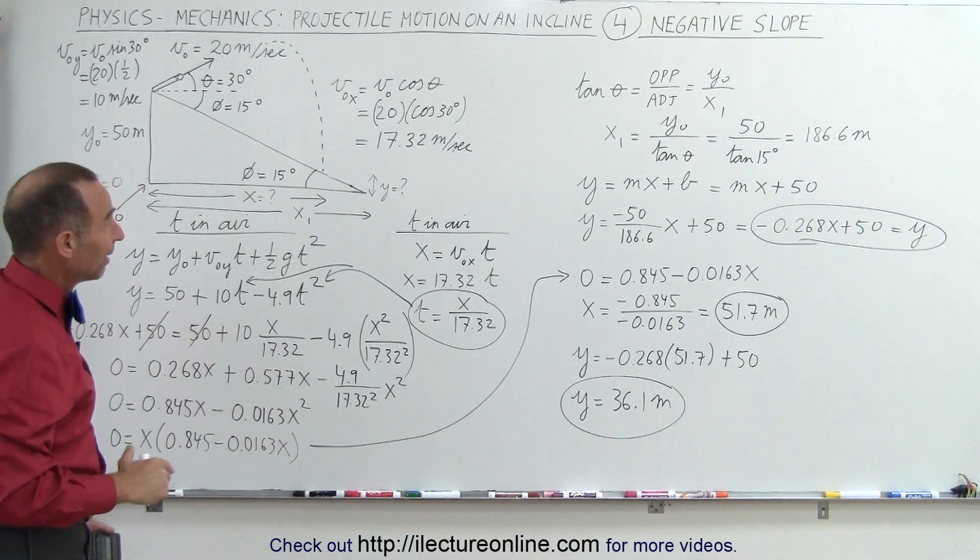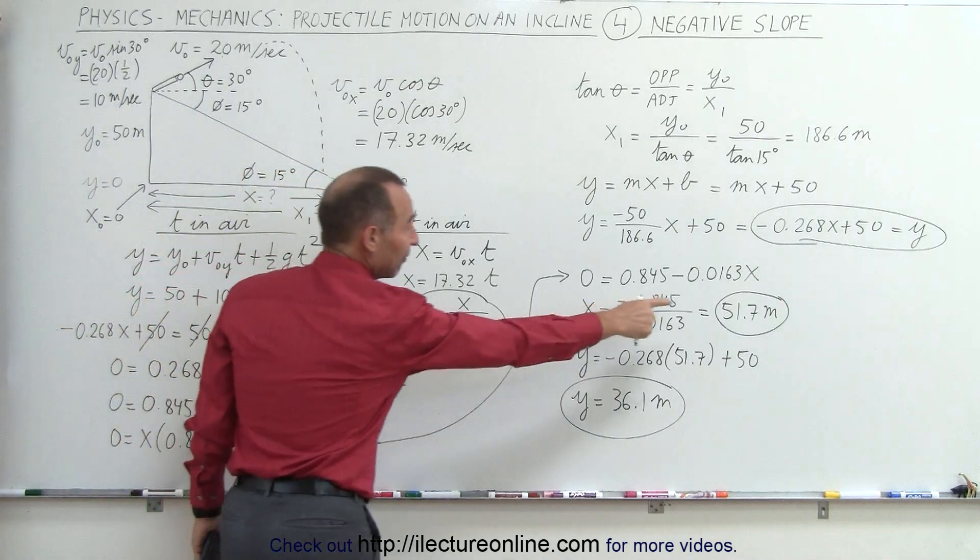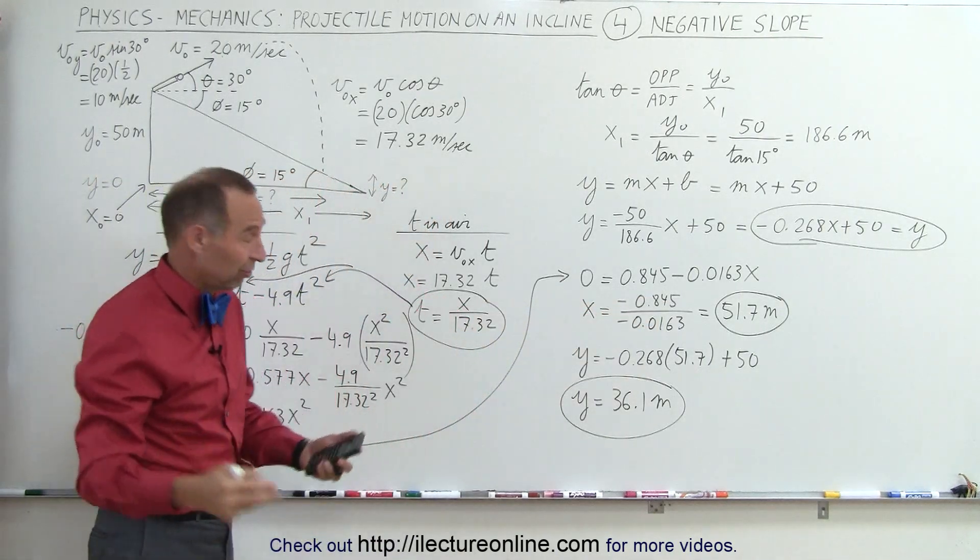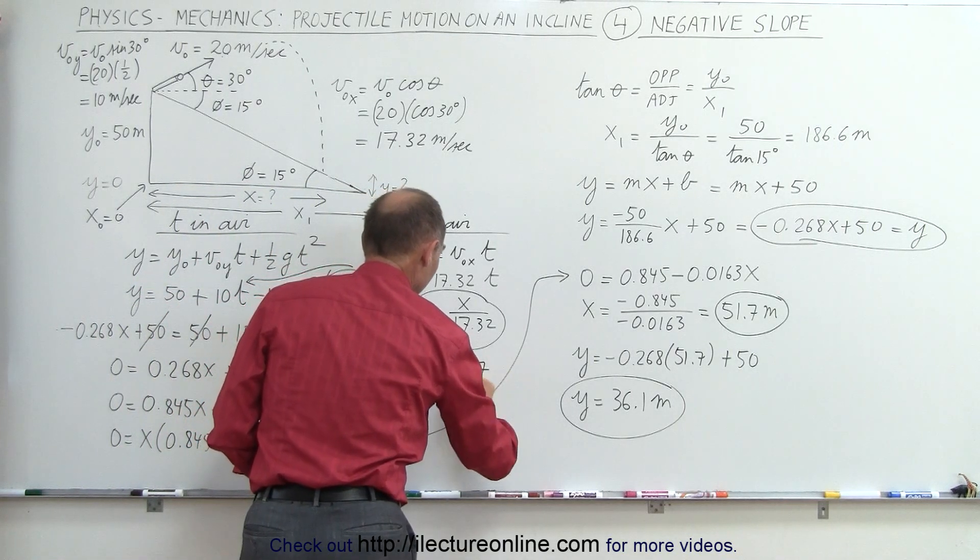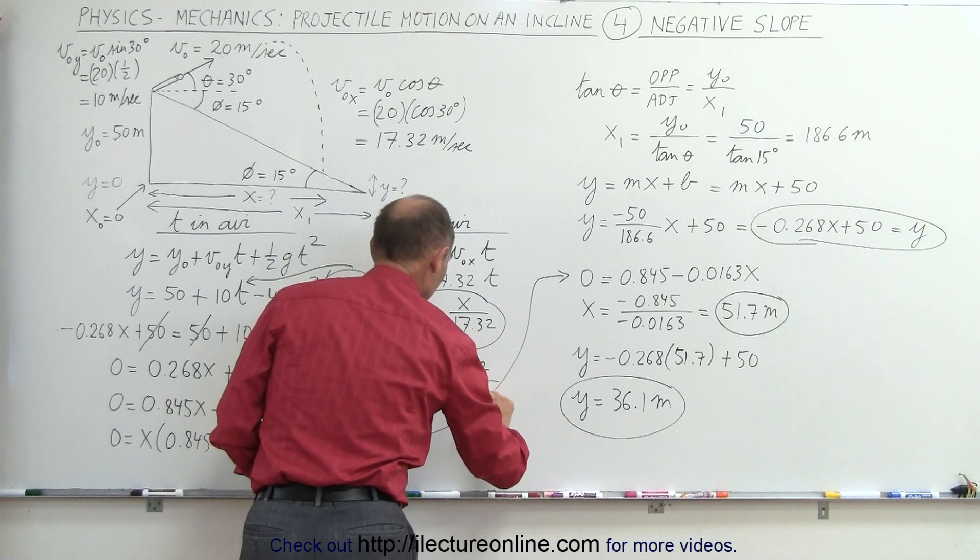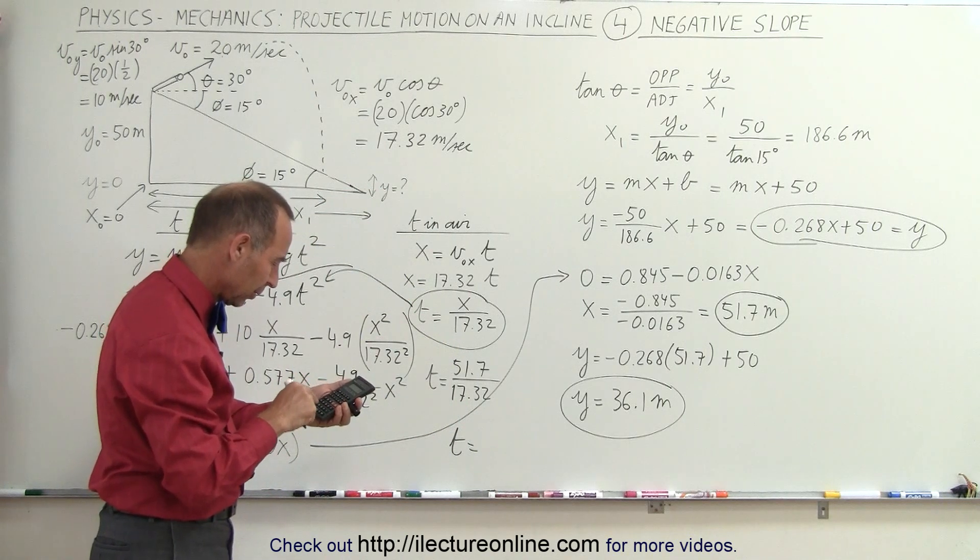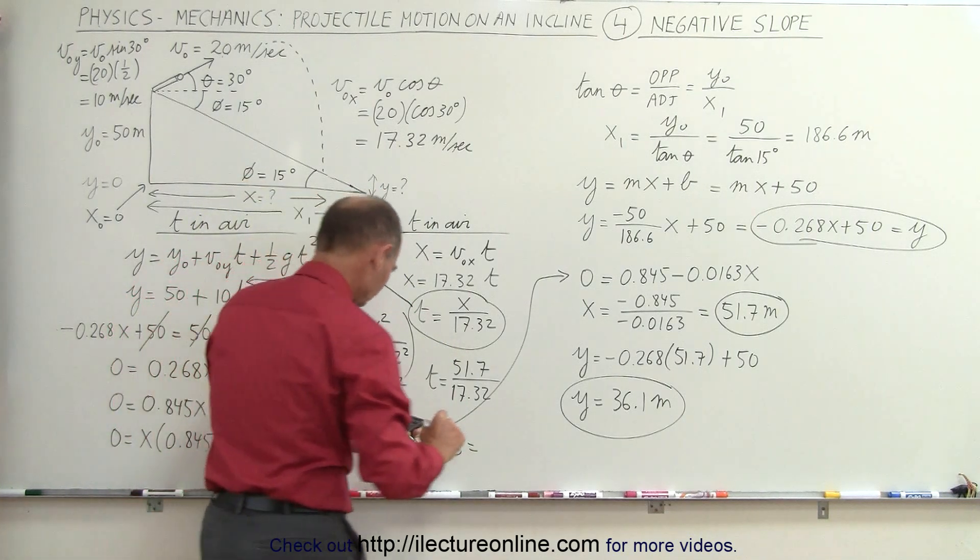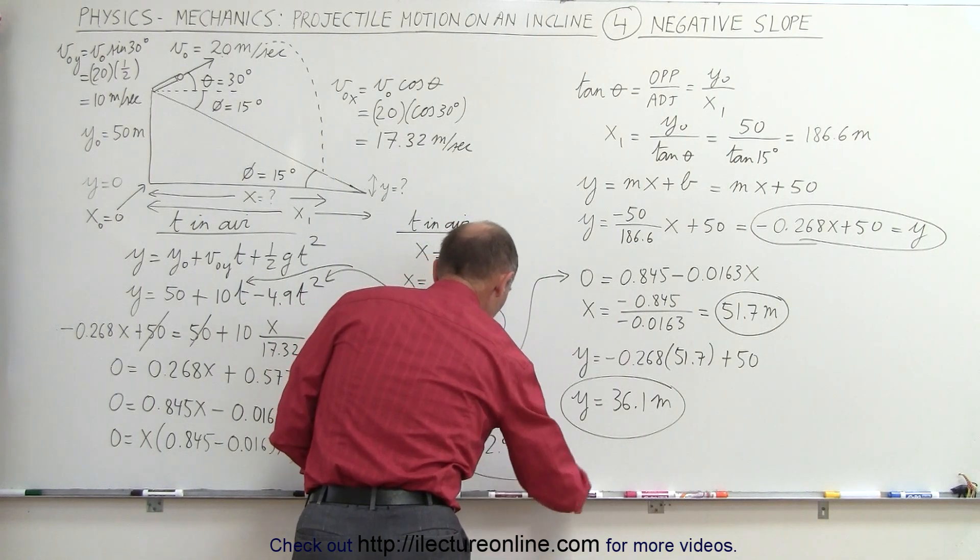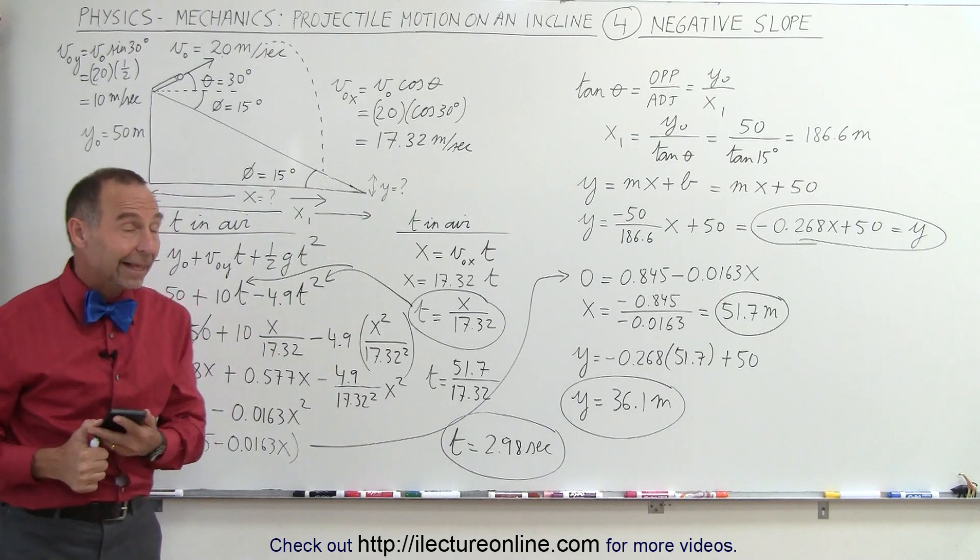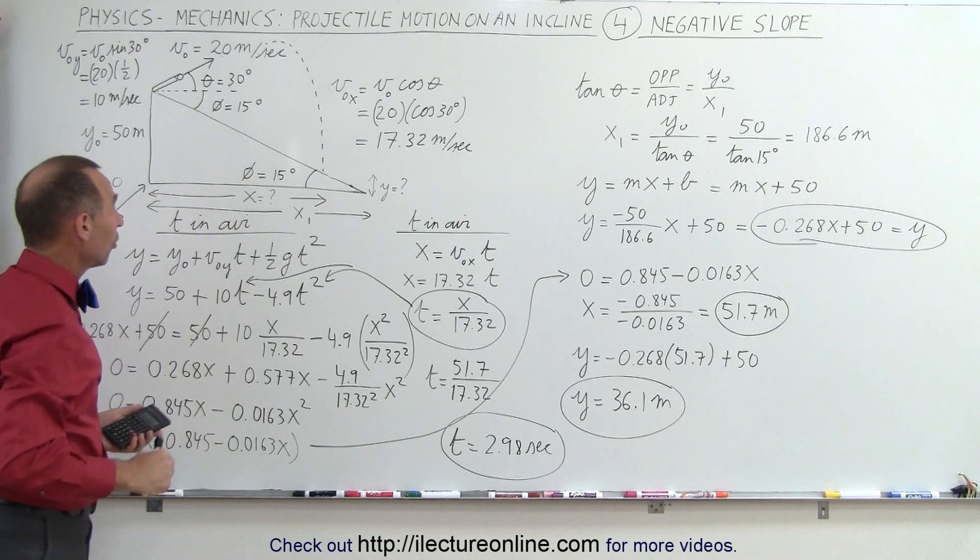Finally if you want to find the time you can then take this equation plug in the 51.7 divided by 17.32 and just in case you want to know what that is equal to, so we take 51.7 divided by 17.32 and we get time is equal to 51.7 divided by 17.32 equals and we get 2.98 seconds for the total trip of the projectile. And that's how we work with a projectile that's fired over a negative slope or an inclined plane that has a downward slope and that's how it's done.